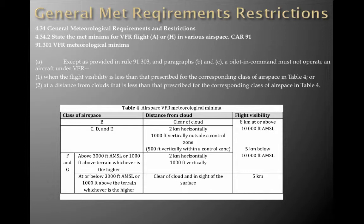And Class G at or below 3,000 feet AMSL or 1,000 feet above the terrain, whichever is higher, you need to be clear of cloud and in sight of the surface, and flight visibility is 5K.